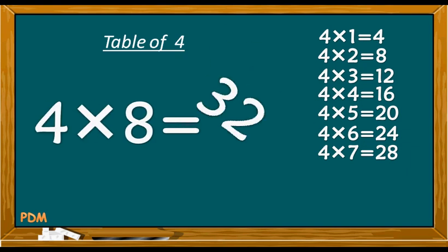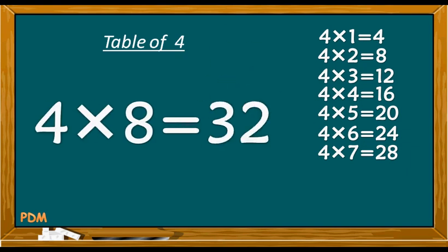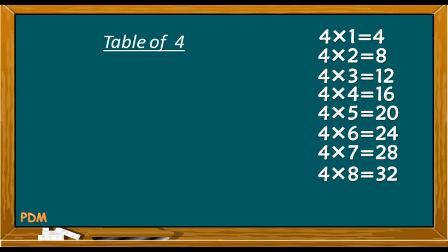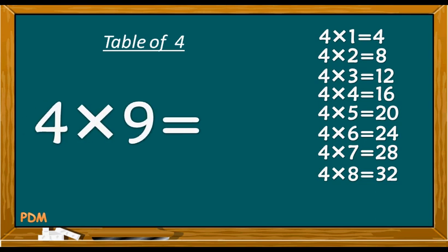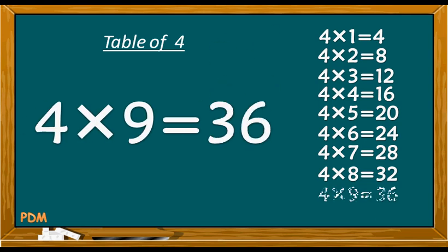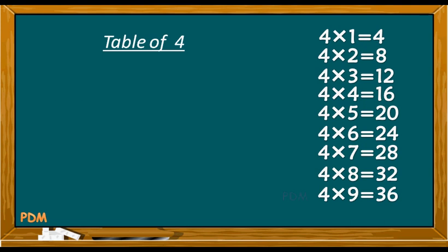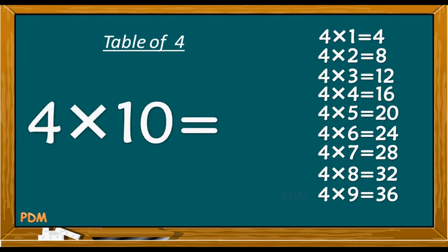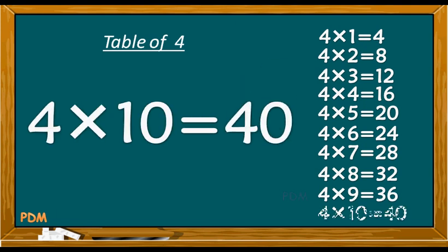Four eights are thirty-two. Four nines are thirty-six. Four tens are forty.